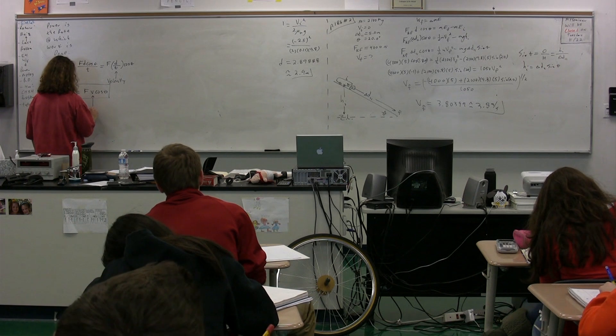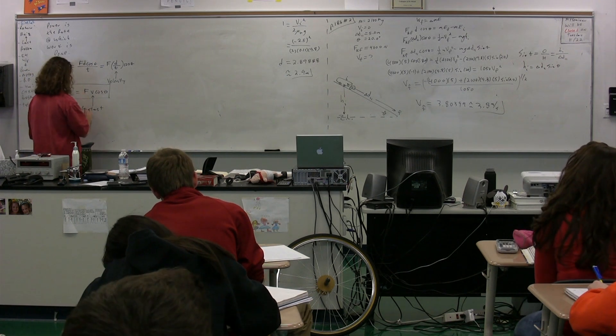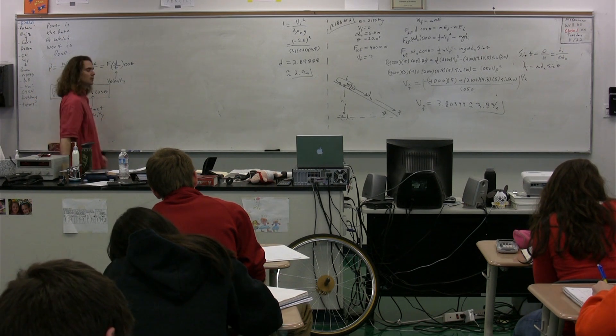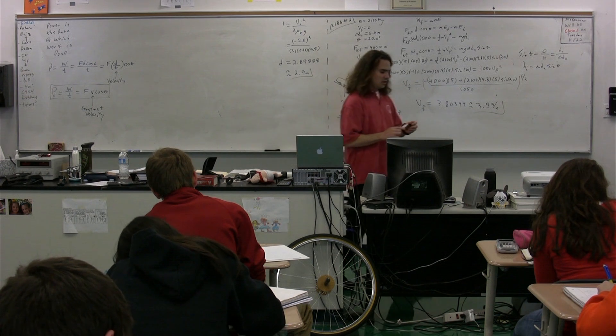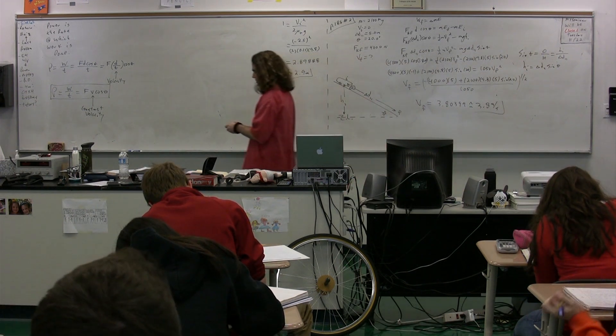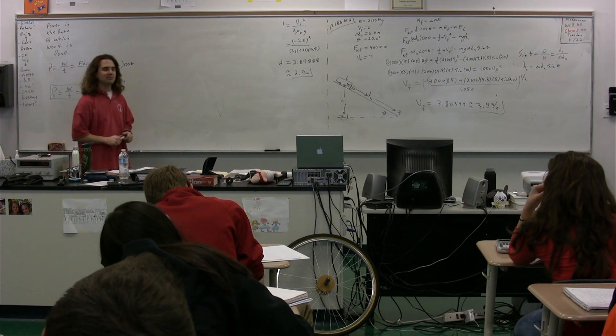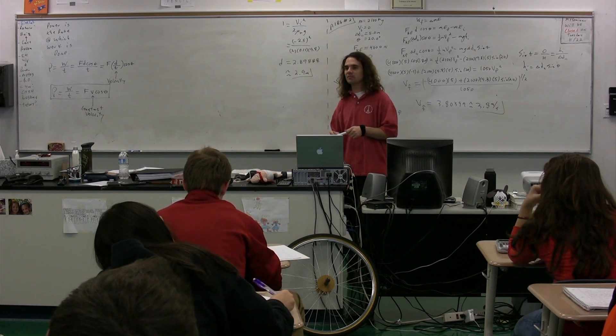Please notice, when you're going to use this equation, if you're going to use the one with force times velocity times the cosine of theta, you need to have a constant velocity. So notice this works just like your work equation, in that for Fd cosine theta, that is the angle between the force and the displacement. In Fv cosine theta, it's the angle between the force and the velocity.